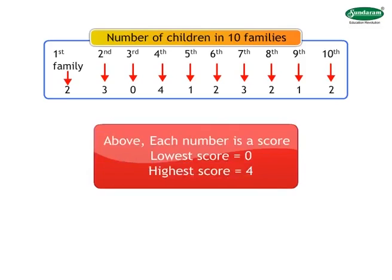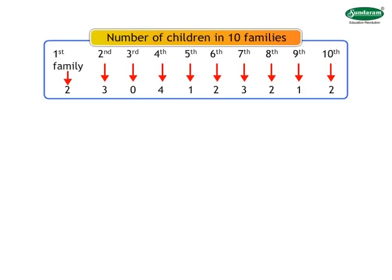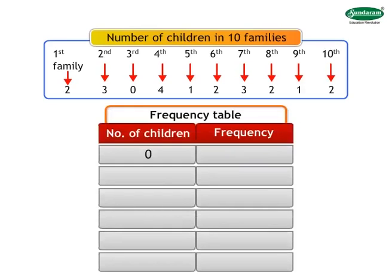We should first check the lowest and the highest score. The lowest score is equal to 0. The highest score is equal to 4. Therefore, all scores are between 0 and 4. The number of times each score occurs is the frequency of that score. Example: 0 occurs only once, 1 occurs twice, and so on. Hence, frequency of 0 is equal to 1. Frequency of 1 is equal to 2.